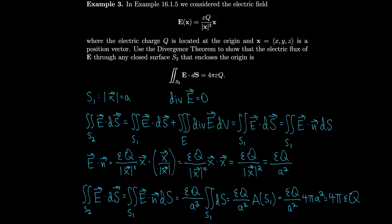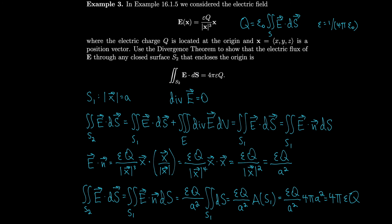Notice that in section 16.7 we discussed Gauss's law, which states that the net charge q equals ε₀ times the surface integral of E · dS, where ε₀ is the permittivity of free space. This is a special case of Gauss's law: if you replace ε with 1/(4πε₀), then moving ε₀ to the other side gives exactly this result.